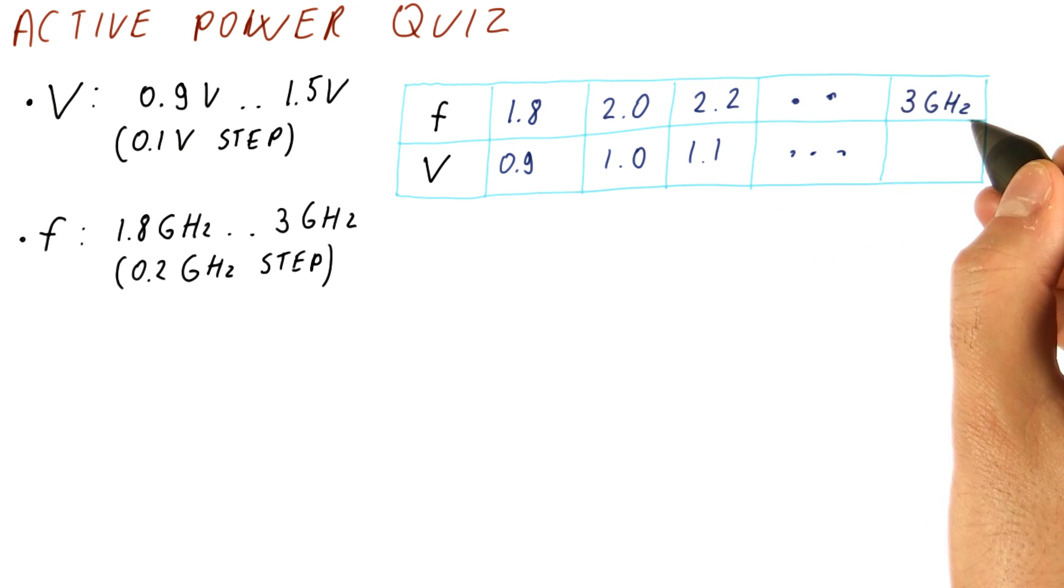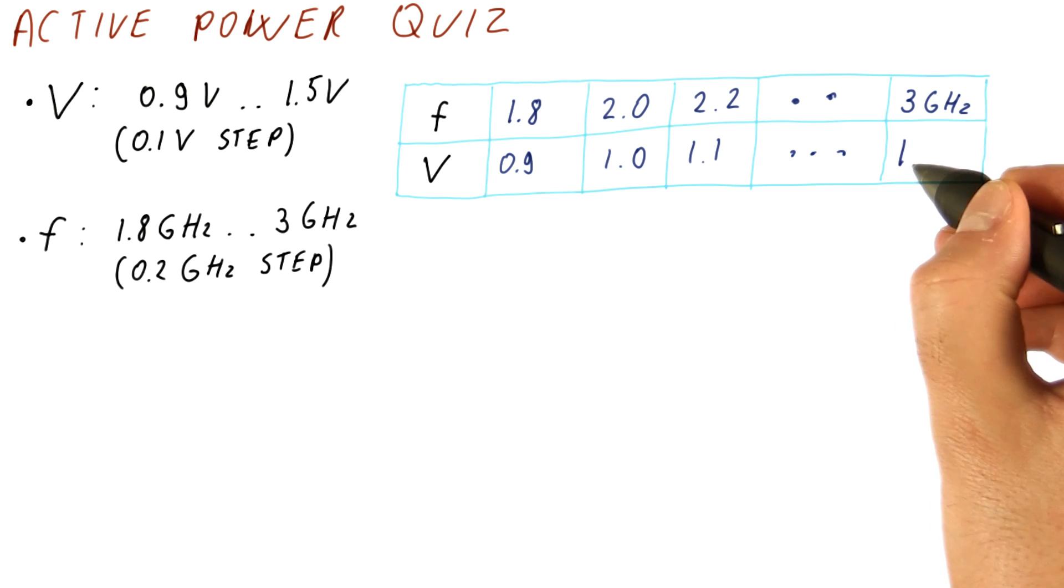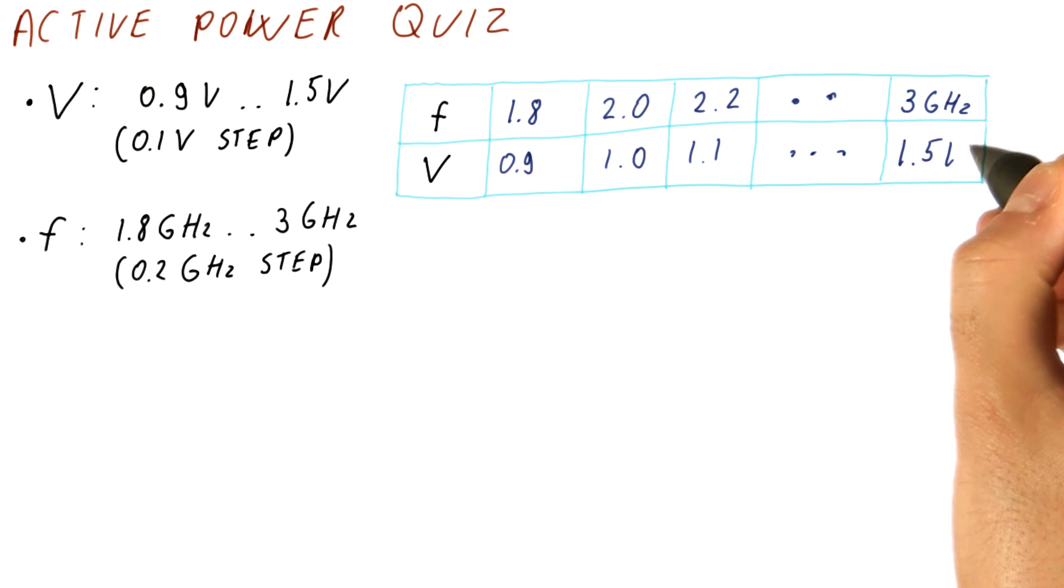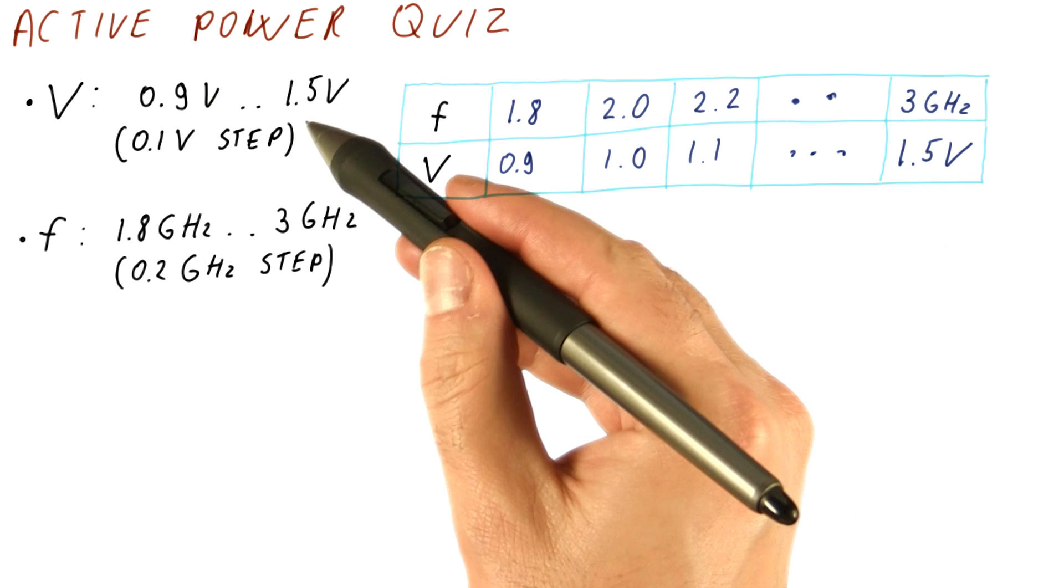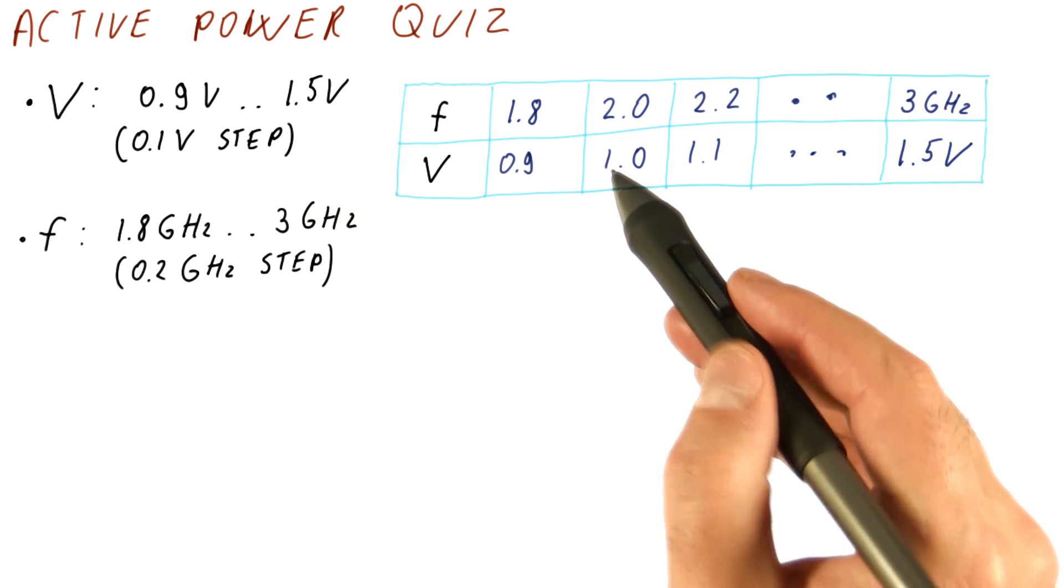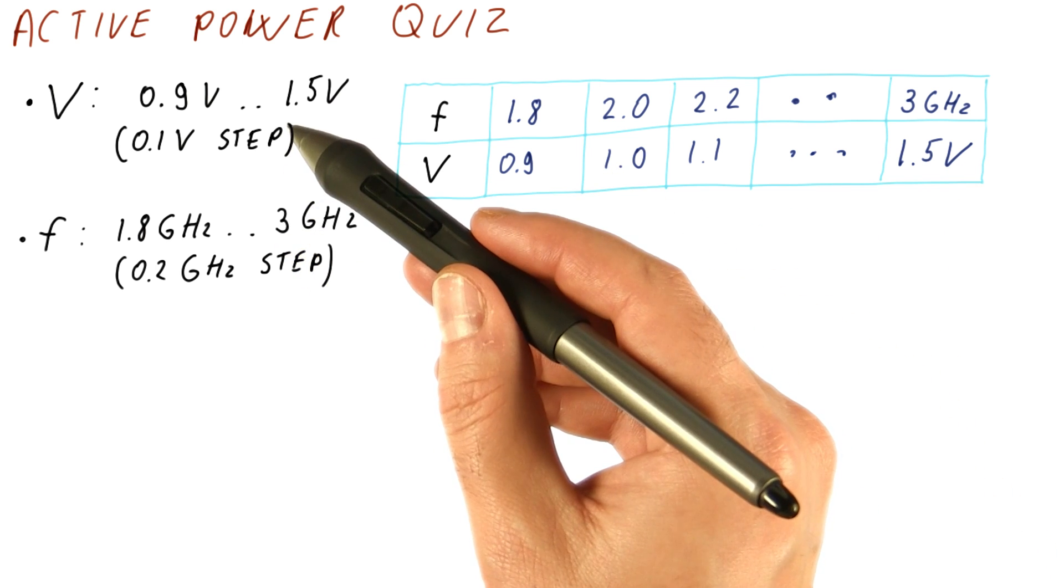And we can only get the highest 3 gigahertz frequency with the highest voltage of 1.5 volts. So you cannot just lower the voltage and increase the frequency. If you increase the frequency, you also have to increase the voltage.